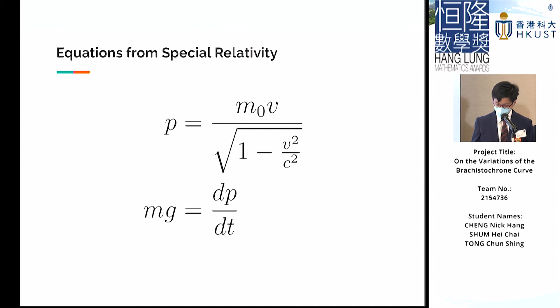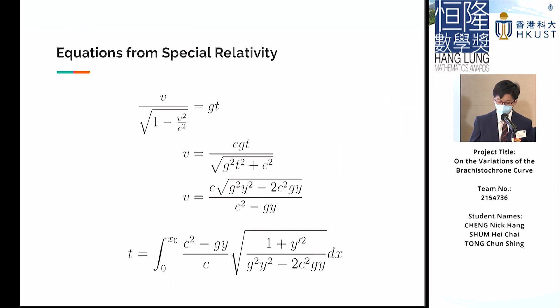After attempting to solve the problem under Newtonian mechanics, we ponder what happens when special relativity comes into play. We know that the usual equations in mechanics become slightly different. For example, the momentum is m0 multiplied by the Lorentz factor. We ignore the differences between the rest mass and relativistic mass, and hence we can still assume the net force mg is the derivative of momentum with respect to time. Through modeling the free fall of an object under these equations, we can obtain v in terms of y coordinates.